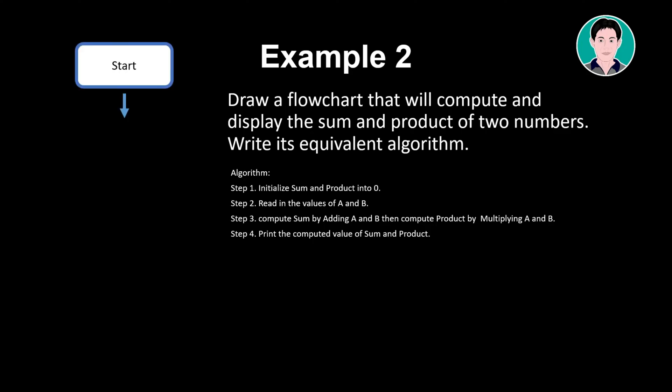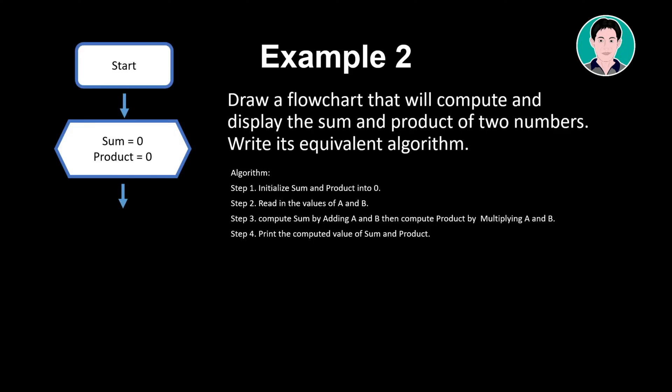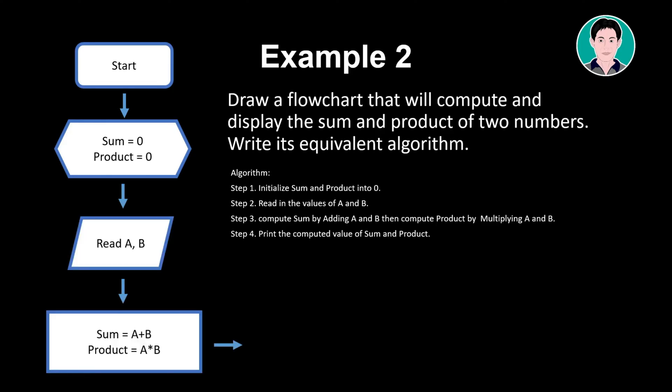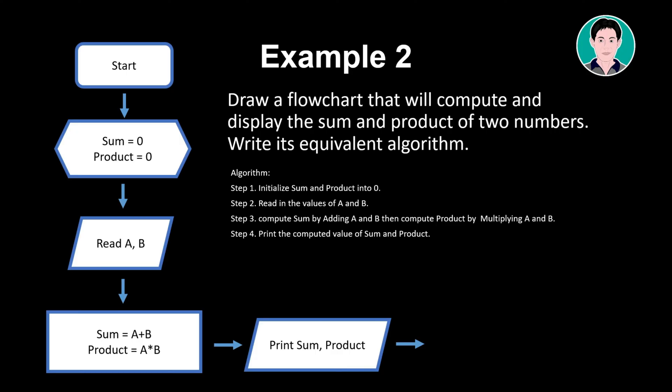Flowchart steps: Start. Sum equals 0. Product equals 0. Read A. Read B. Sum equals A plus B. Product equals A multiplied by B. Print sum. Print product. End.